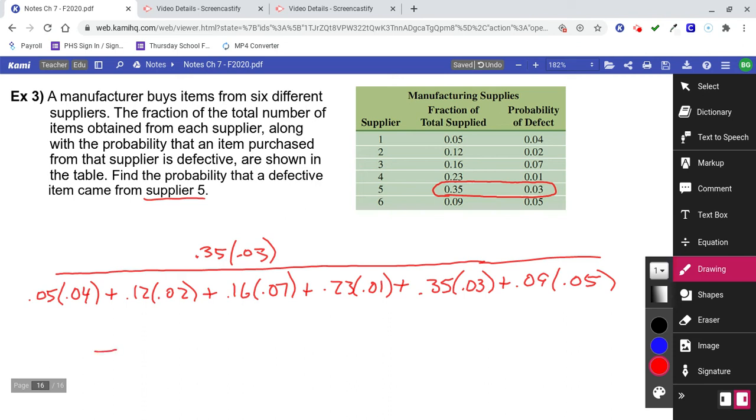I'm going to end up 0.35 times 0.03 is 0.0105 on the top. And on the bottom, once you do all of that stuff, you multiply and you add and you get 0.0329 on the bottom.